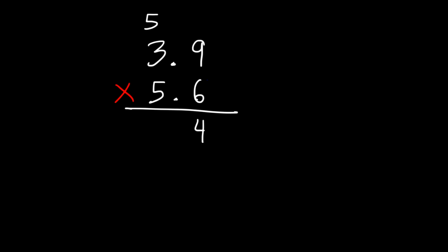Next, let's multiply 3 times 6. 3 times 6 is 18, and 18 plus 5 is 23. Now let's move on to the 5. Let's multiply 5 and 9. 5 times 9 is 45, so we need to write the 5. But we need to add a 0 first, and then we'll write the 5.